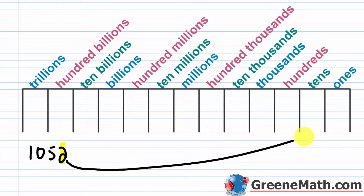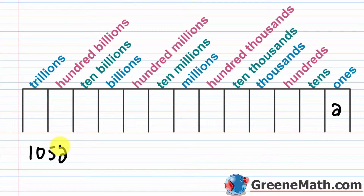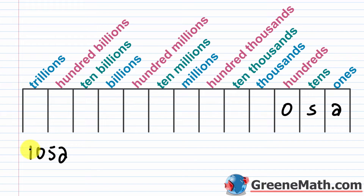So that 2 goes right there where it says ones. As I move to the left in the number, I match that movement to the left on my place value chart. So this 5 goes here where it says tens. This 0 goes in the position that says hundreds. Then going one more to the left, this 1 goes into the thousands. So what does it mean to have ones, tens, hundreds, thousands — where does that come from?